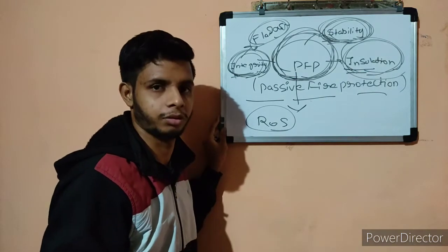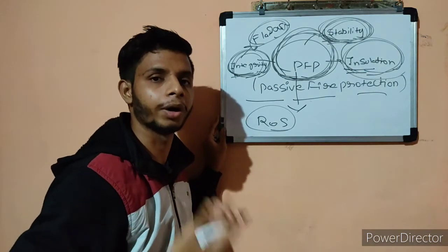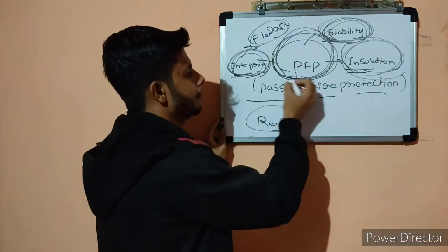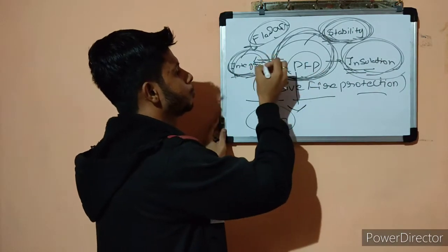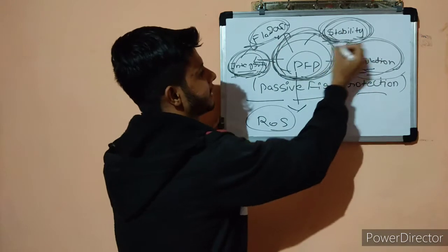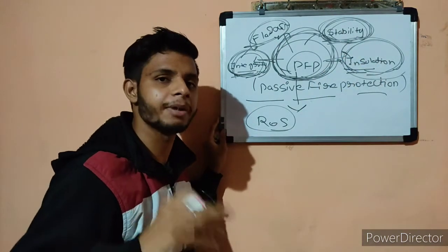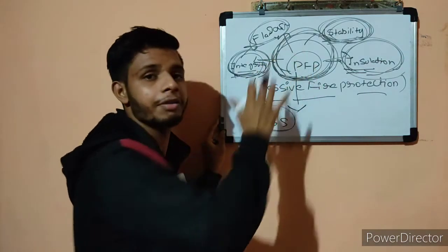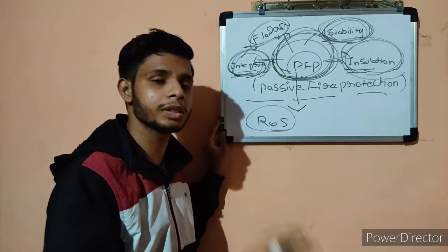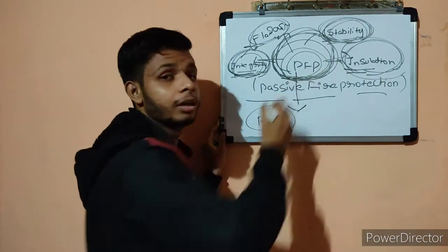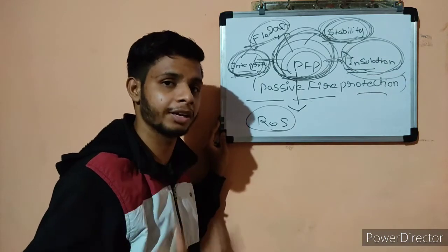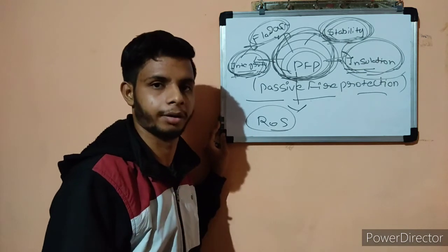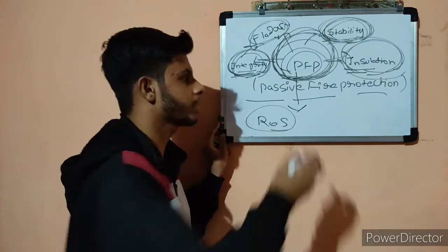Third is insulation. Insulation means it should prevent heat transmission, because if heat is transferred by conduction or radiation, the protected side can also catch fire. This is why fire testing is so important — whatever passive fire protection material is in the market is first tested in laboratories of NIST and different fire testing companies, and only after good performance is it released for public and commercial use.